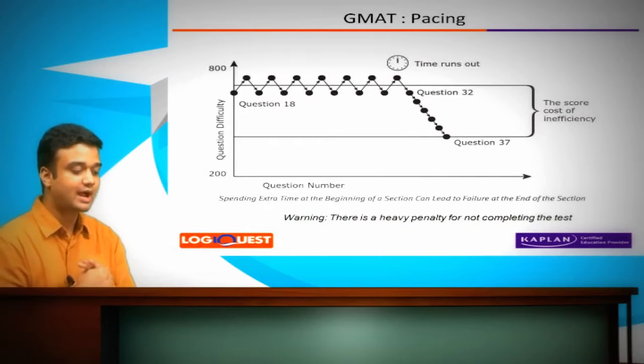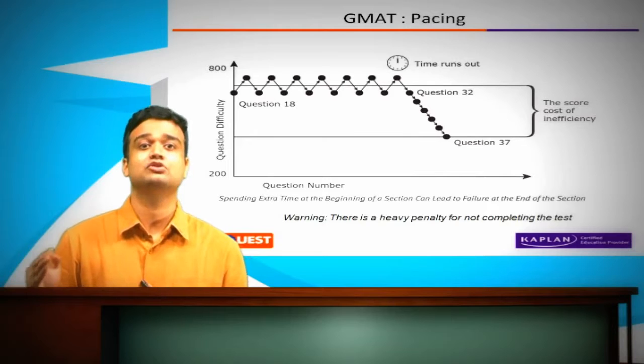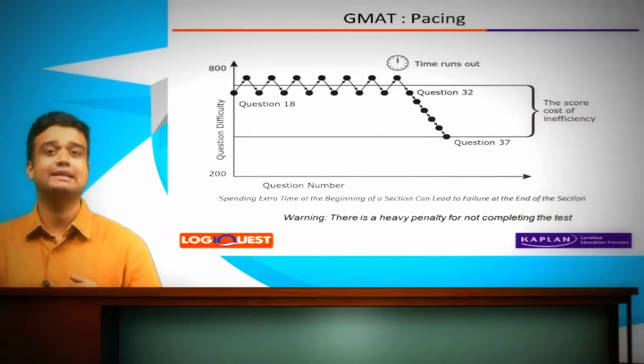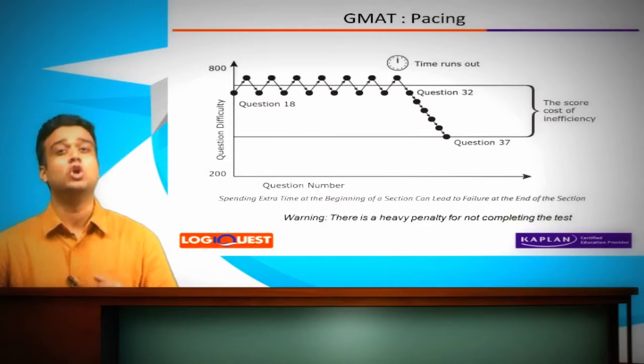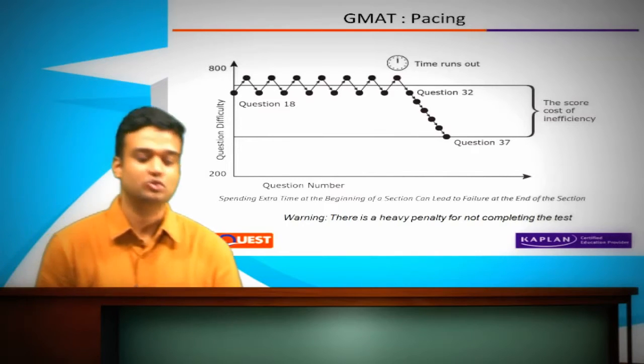Remember I also told you how getting consecutive questions wrong can really hit your score, because obviously it's going to take you down to a very low level, and then even if you start getting questions right, you're still only getting questions right that are of lower difficulty level. So it really does take a hit on your overall score.